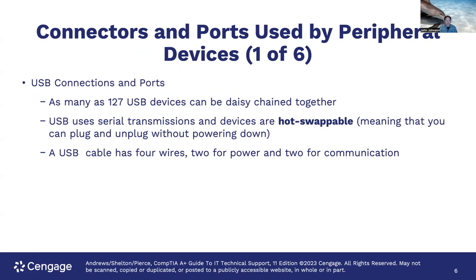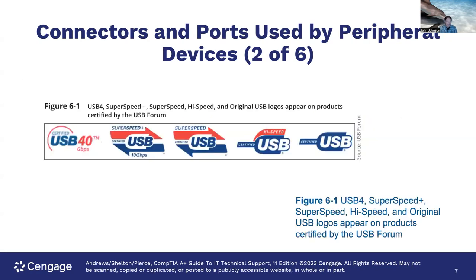For connectors and ports used by peripheral devices: USB connections and ports — you can have as many as 127 USB devices daisy-chained together, though that would be quite impractical. USB uses serial transmissions and devices are hot swappable, meaning you can plug and unplug them without rebooting. A USB cable has four wires: two for power and two for communications. USB standards include USB 4, SuperSpeed Plus, SuperSpeed, High Speed, and original USB. Logos on products are certified by the USB forum.